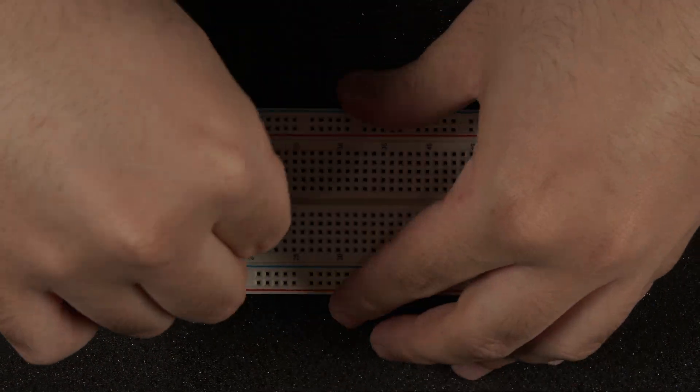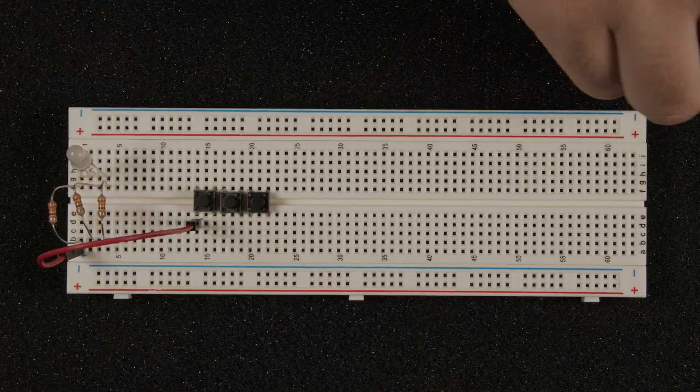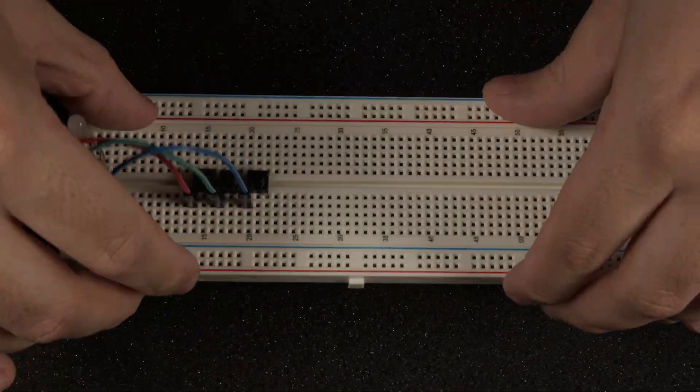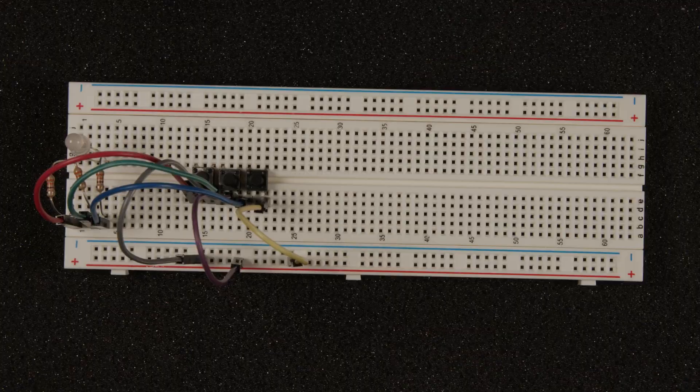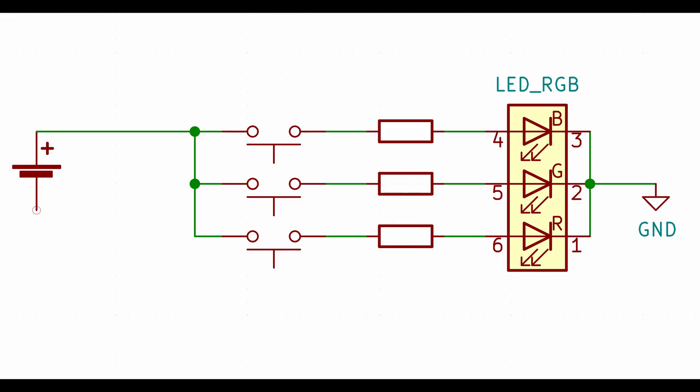Once we get all the components in, we will need to connect them. So let's grab our jumper wires and work one by one to make the connections shown in the schematic. It also helps as soon as you make the connection to cross it off the schematic so you know what is left to do.